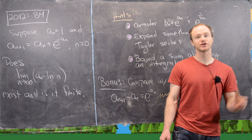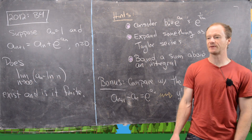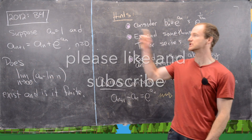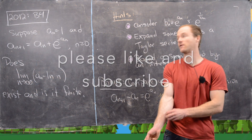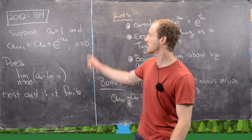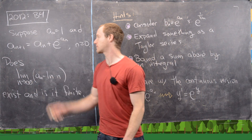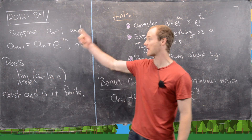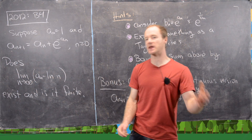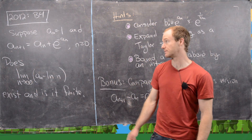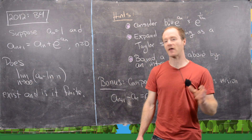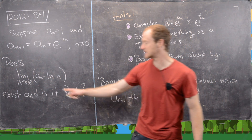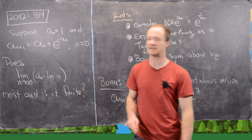Some of you have been requesting solutions to harder Putnam problems, and this is me dipping my toes into the land above A3 and B3. Here we'll look at a solution to the 2012 exam problem B4. Suppose that a_0 = 1 and a_{n+1} = a_n + e^{-a_n} for n ≥ 0. We have this recursively defined sequence that is wildly non-linear due to the exponential function. The question is: does the limit as n → ∞ of (a_n − ln n) exist and is it finite?